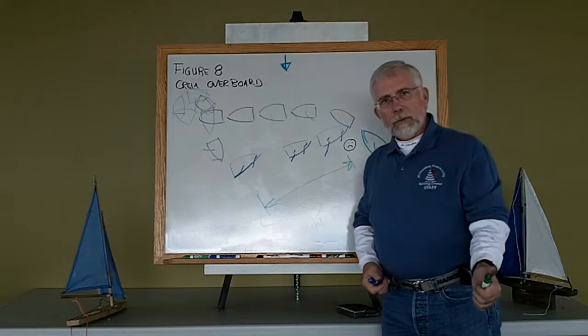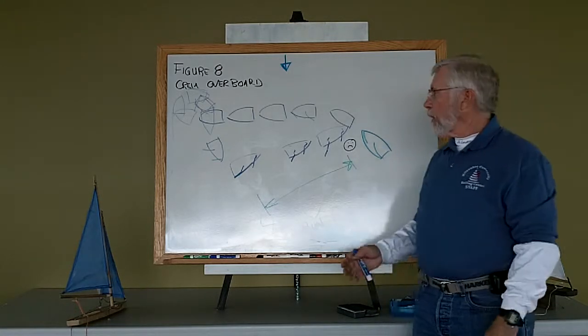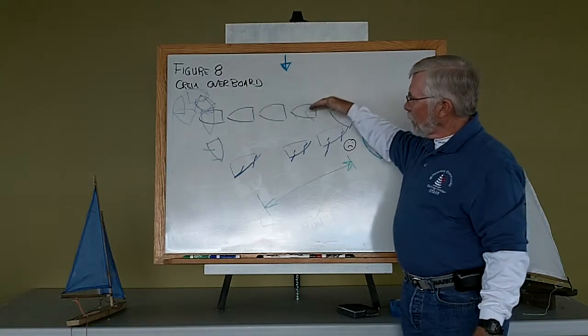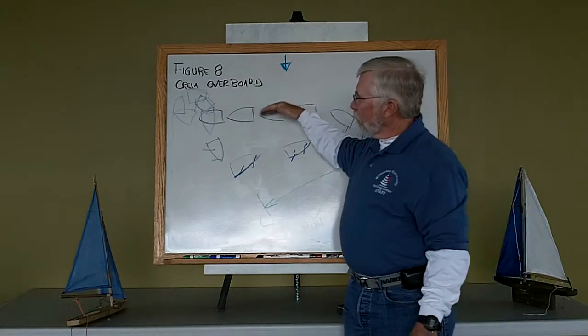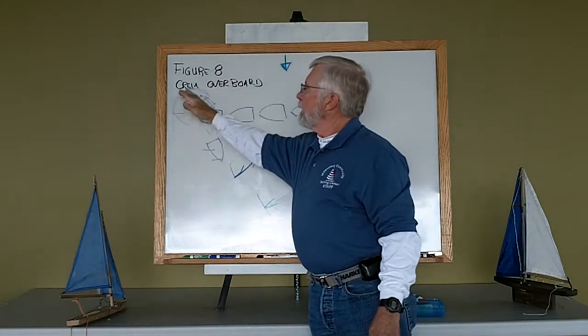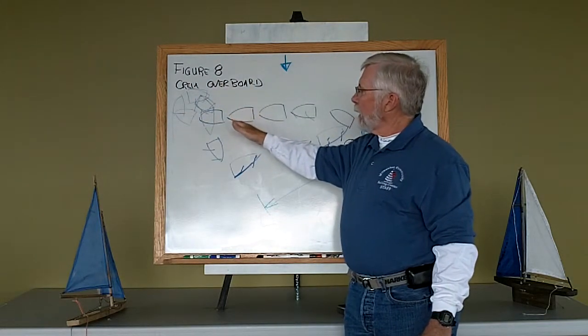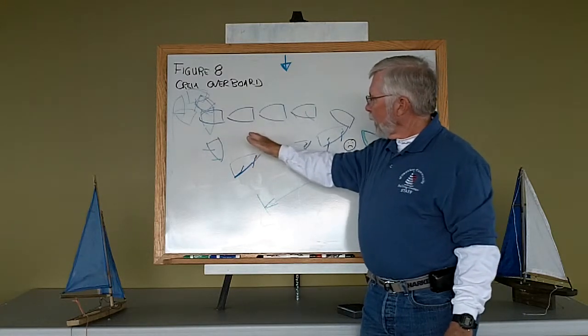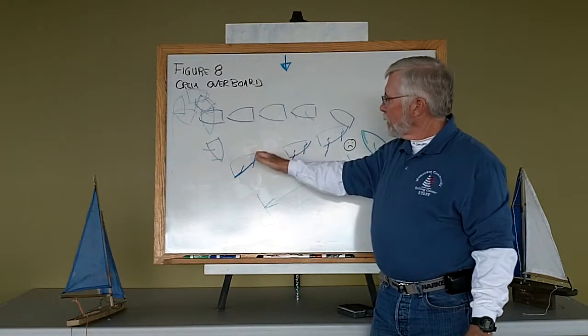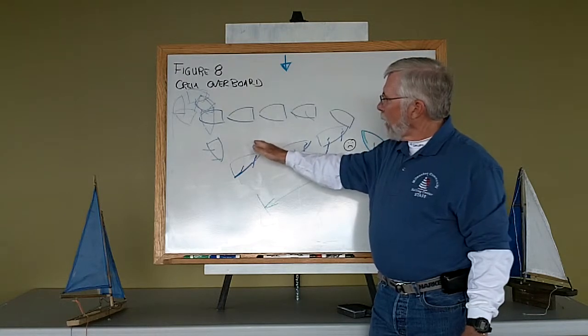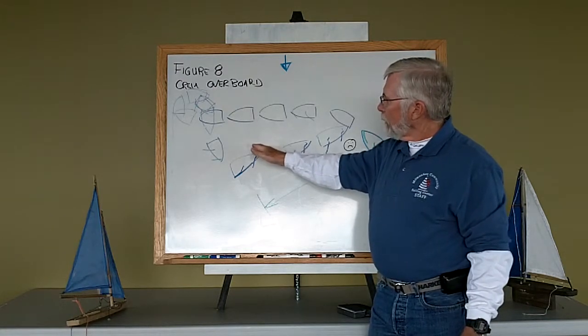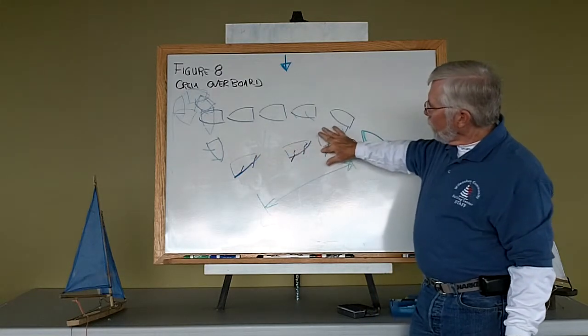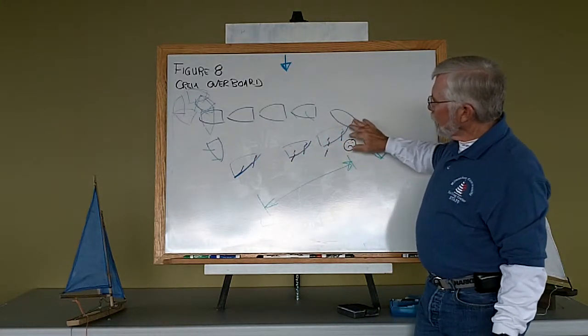So crew overboard, litter the water, appoint a spotter, fall off to a beam reach. We're going to sail four to five boat lengths, tack as quickly and as tight as we can into a deep broad reach. We're going to come down to where the bow and pretty close to the mast is just about gone from upwind to downwind, and then sharply turn up and pick up the crew.